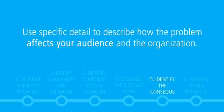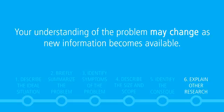Number five, use specific detail to describe how the problem affects your audience and the organization. Identify any direct and indirect costs associated with the problem. Emphasize the benefits of your work by outlining the consequences of the solution. Finally, number six, your problem statement is likely to be a work in progress. If you're still collecting data, interviewing affected parties, or developing alternative solutions, let your audience know. Your understanding of the problem may change as new information becomes available.